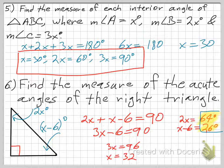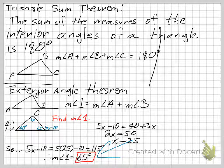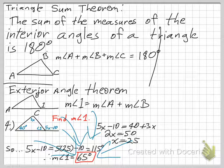A quick correction: when I presented problem four, I incorrectly said the measure of angle 1 was 165 degrees at one point. The correct answer is 65 degrees — I wrote it correctly and said it correctly twice but misspoke once. The measure of angle 1 is 65 degrees.